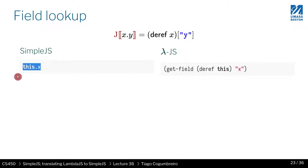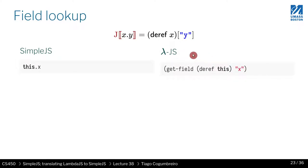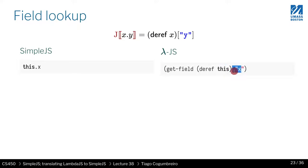In simple JS you have this syntax, and in lambda JS the actual syntax would use get_field, which is the outermost thing. The first parameter is deref. In your homework, you have to write the AST for get_field, the AST for deref, the AST for 'this' as a variable, and the AST for a string.